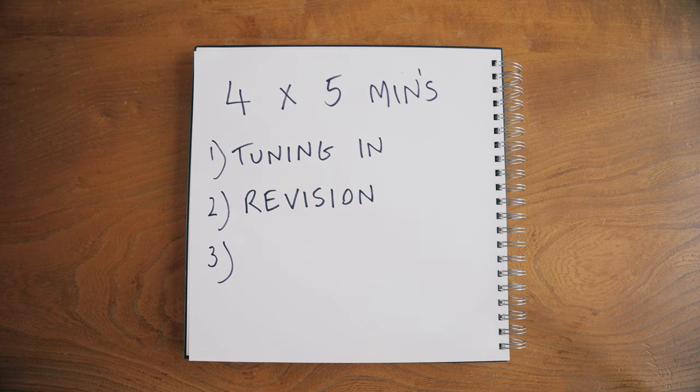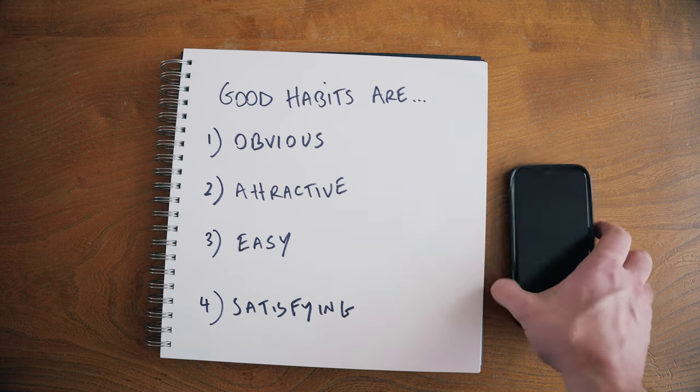How do these relate to musical practice? Take 'make it obvious': the four-by-five structure outlined earlier is a great example of simplifying a dense, multi-faceted process. Writing down those four points makes it even more obvious. Making a practice calendar with allocated days and times makes it more obvious again. Removing distractions like phones and devices will help you focus on your plan with clarity of thought.